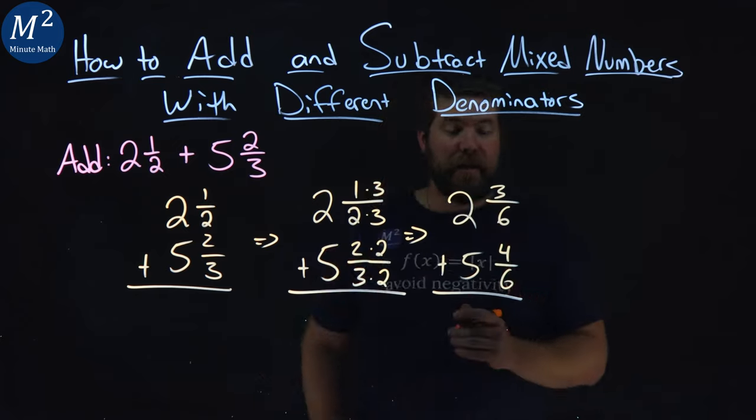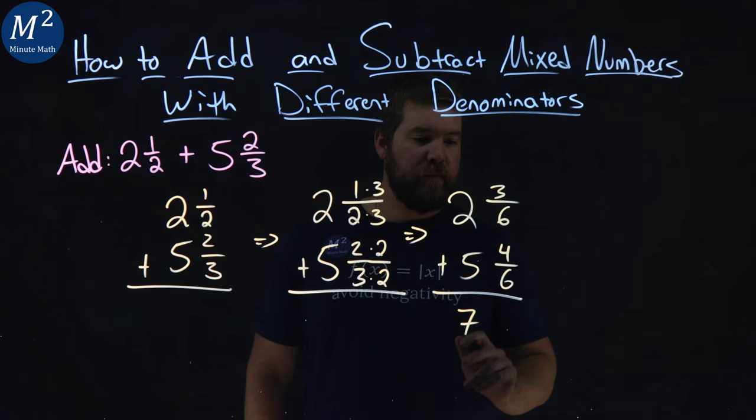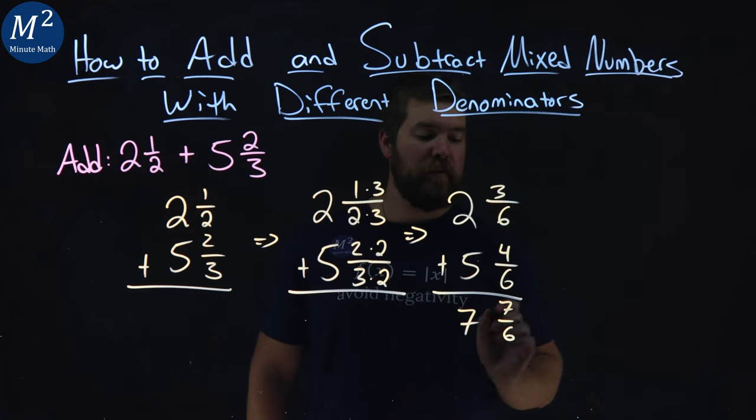Now we can add these numbers here. Let's go down. 2 plus 5 is 7. We're adding, we have the same denominator of 6 here in the fraction. We add the numerators. 3 plus 4 is 7.